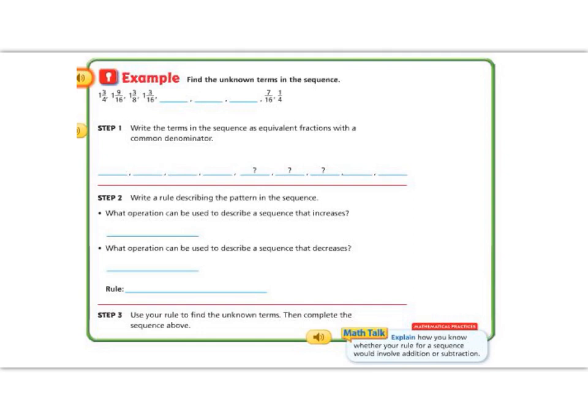Well, this is kind of tricky to tell what's happening in our pattern because there's so many different denominators. So I know that my number is getting smaller because I started with 1 3/4 and I ended with 1/4, but let's go ahead and write these all as a common denominator so that we know what's happening to our pattern.